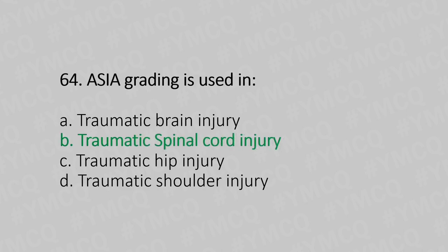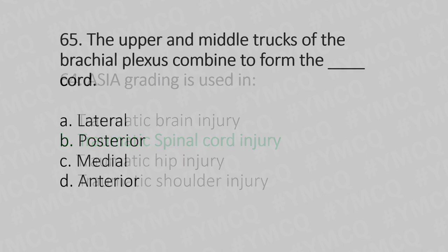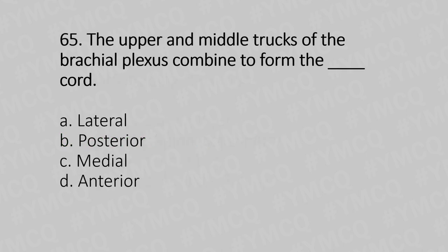Question 65: The upper and middle trunk of the brachial plexus combine to form the — Option A: lateral cord, Option B: posterior cord, Option C: medial cord, Option D: anterior cord. The answer is Option A, lateral cord.